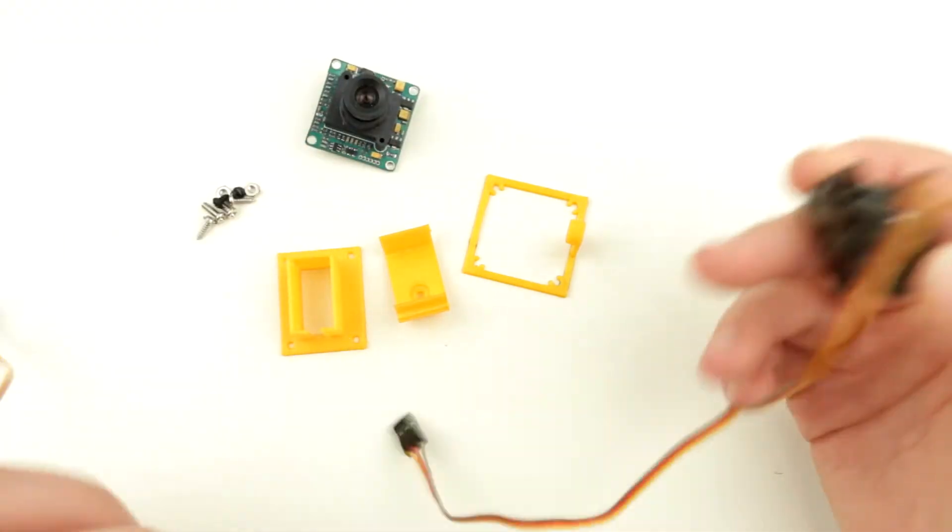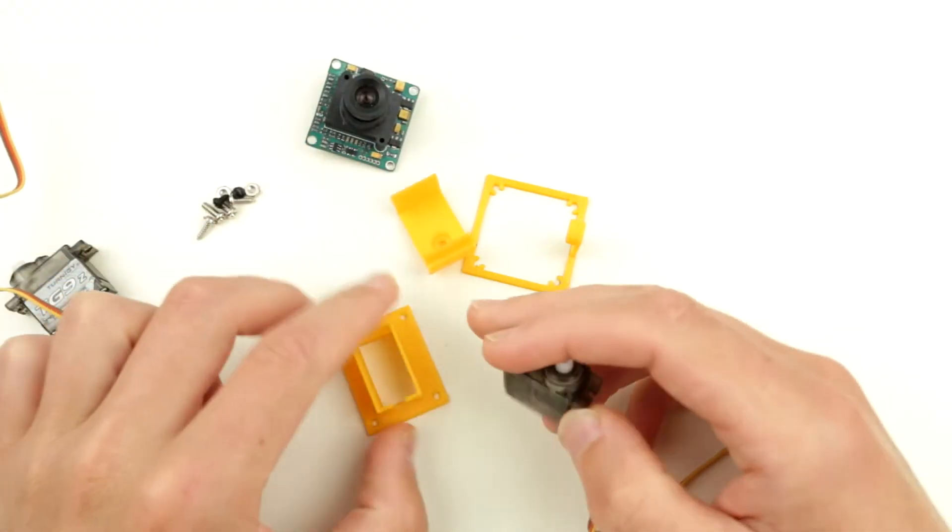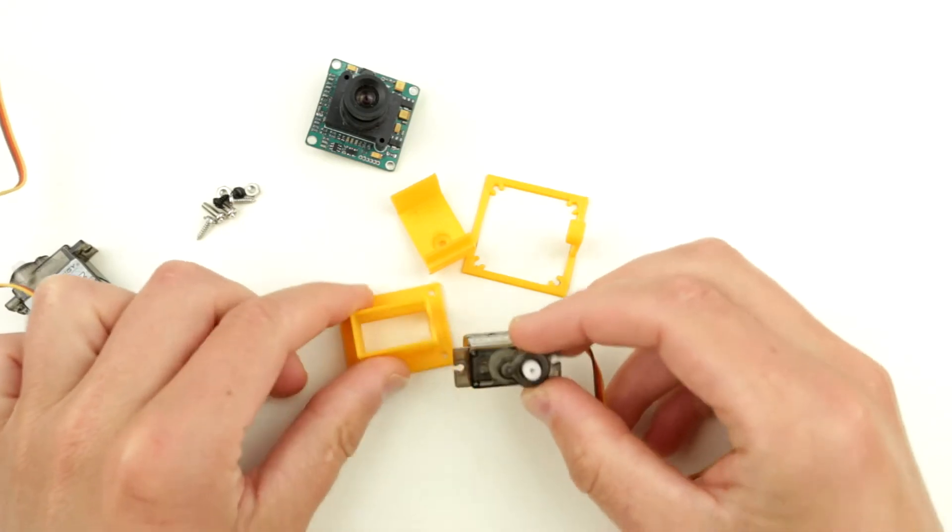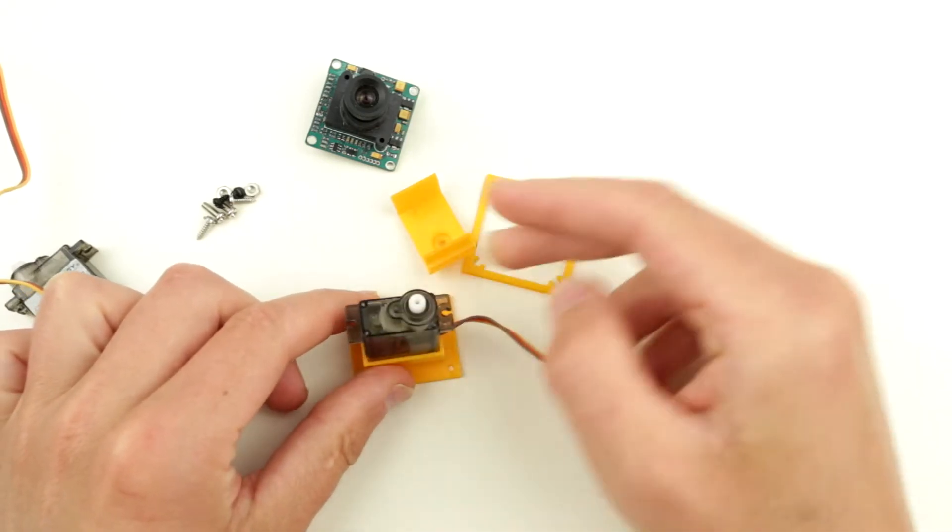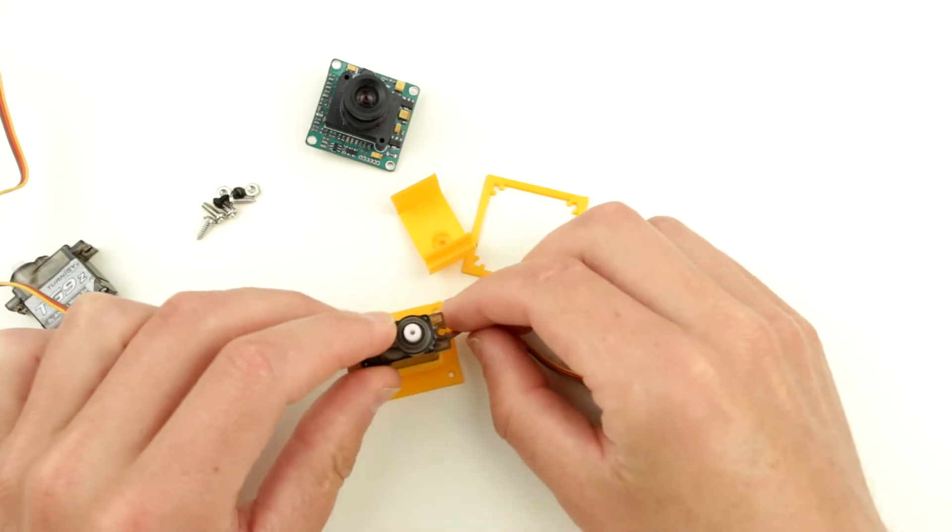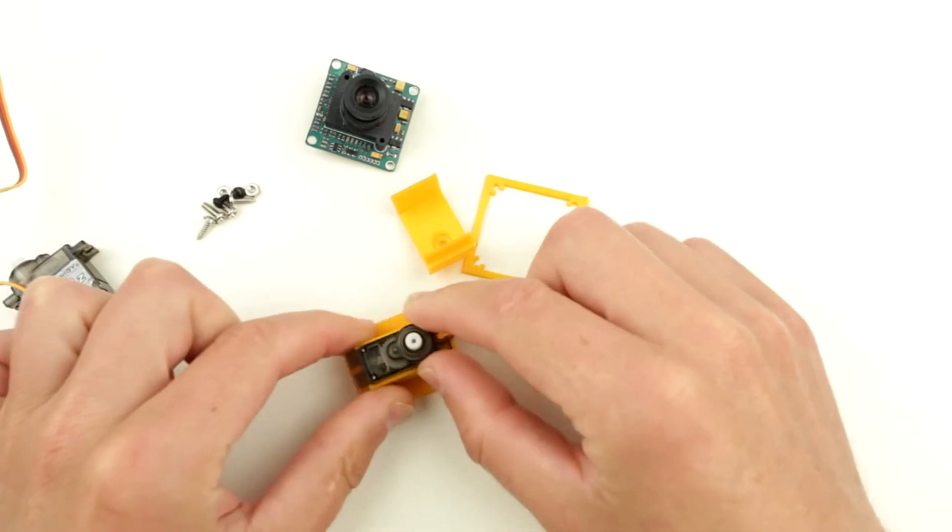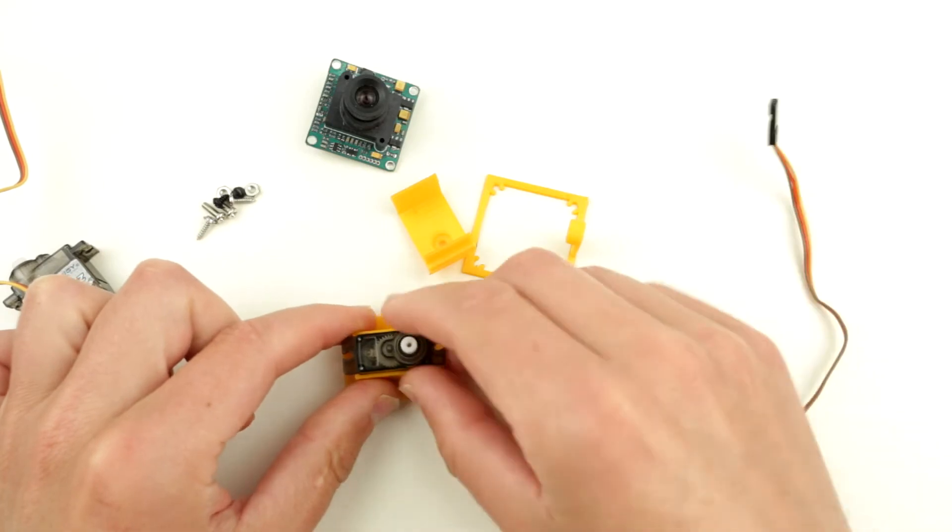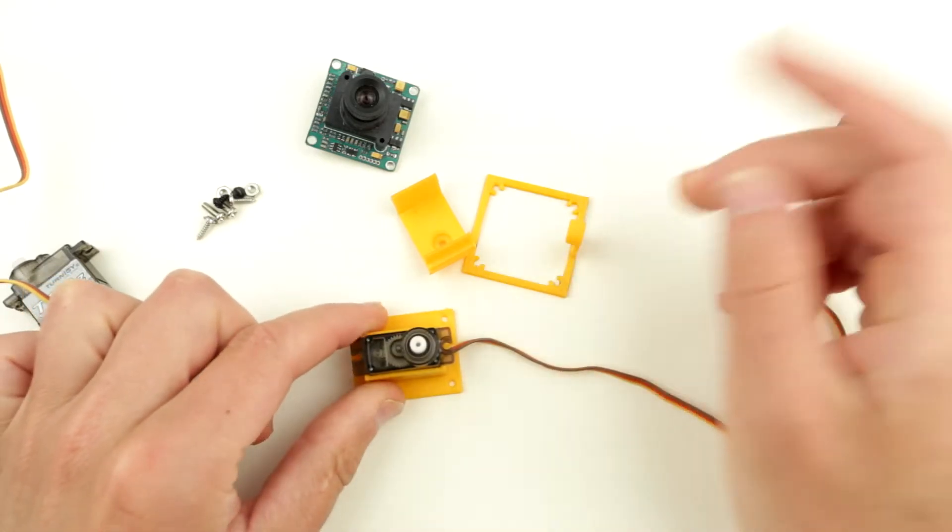So the idea is that, for example, the bottom servo is actually in the base and you don't have to mount it in any other direction. So it's actually part of the base, just like that. Alright.